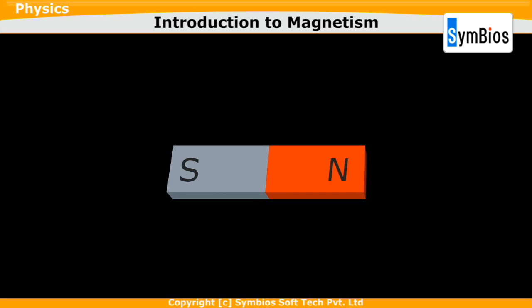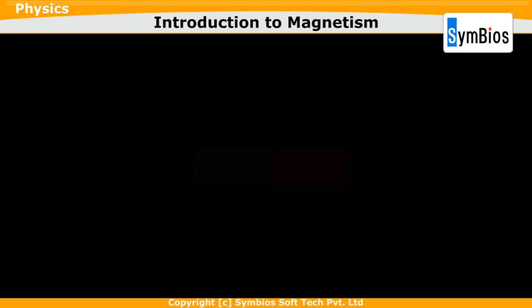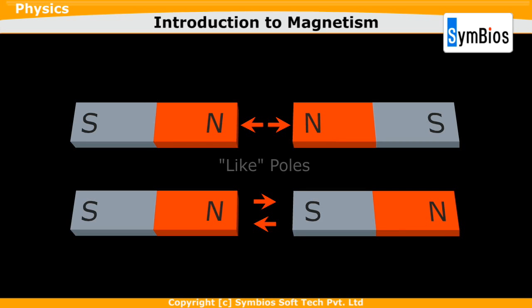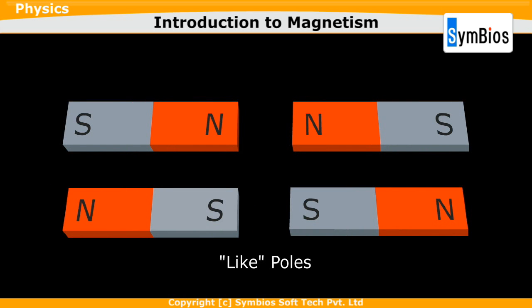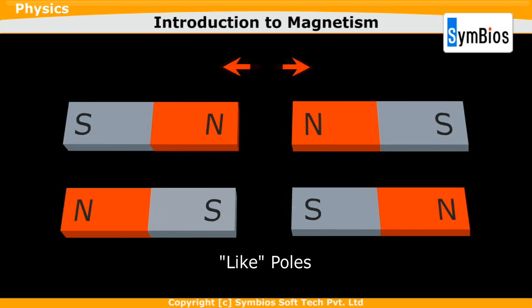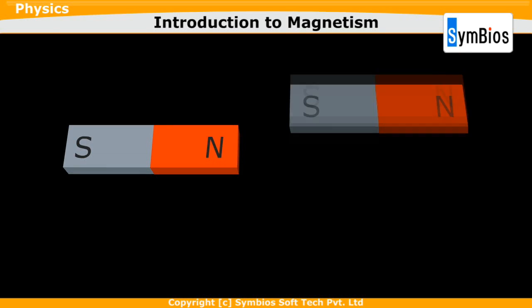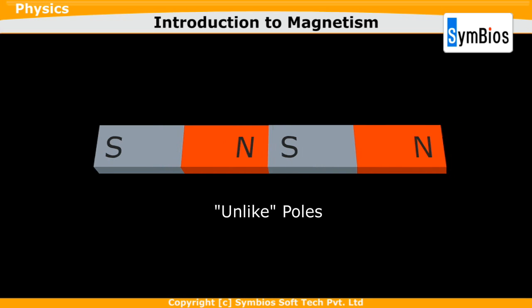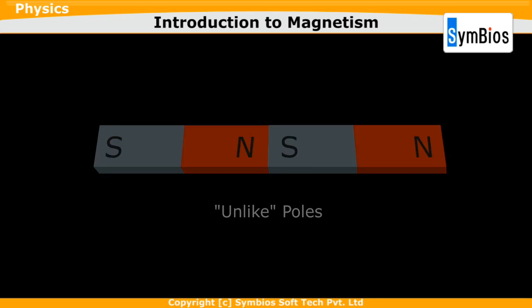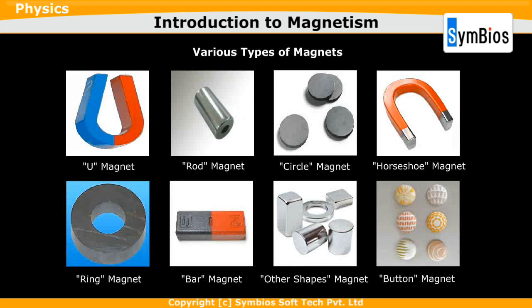Every magnet has two poles, north and south. In magnets, like poles repel and unlike poles attract. When we bring the like poles of bar magnets together, we find that they repel. When we bring two unlike poles together, they attract. Magnets come in various shapes and sizes.